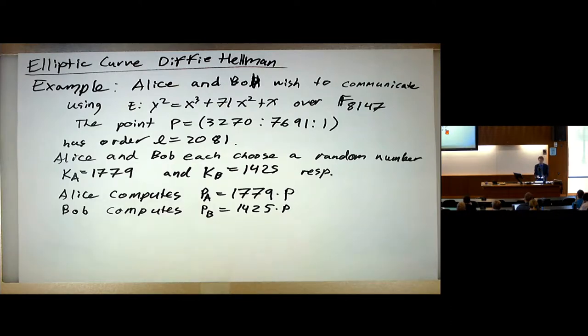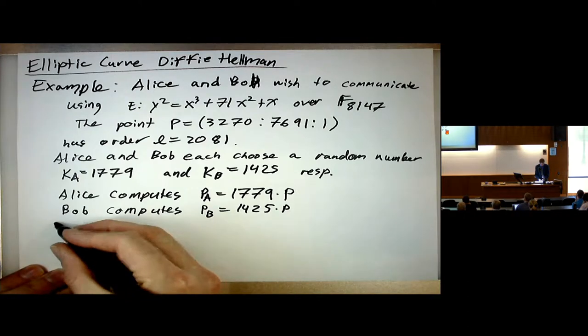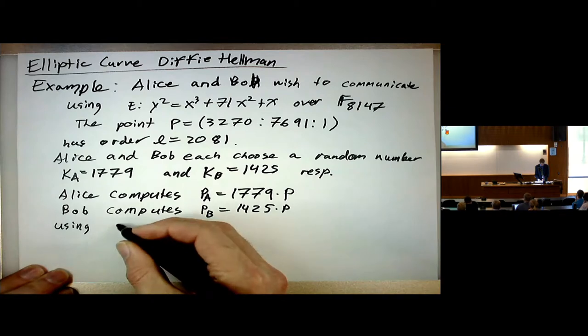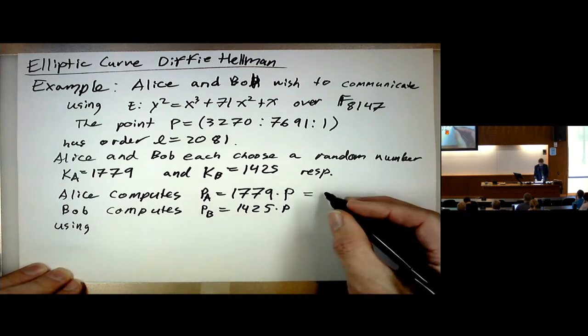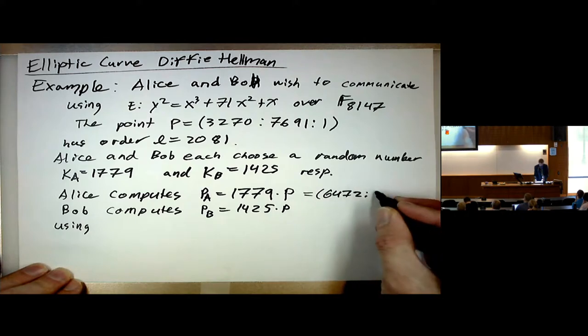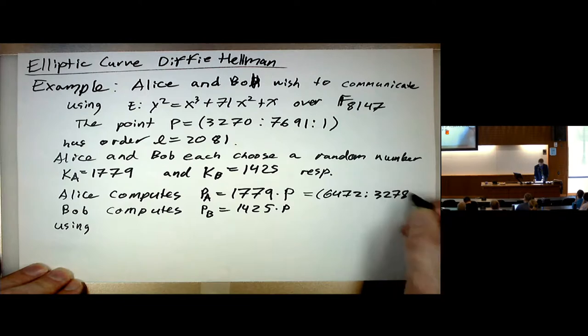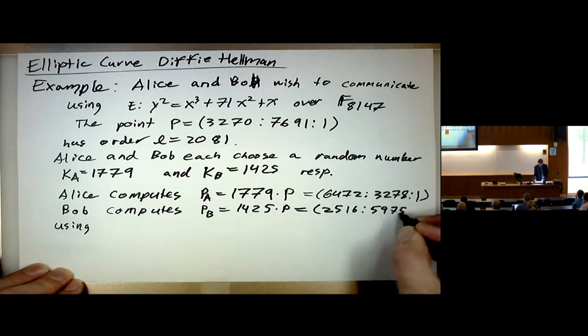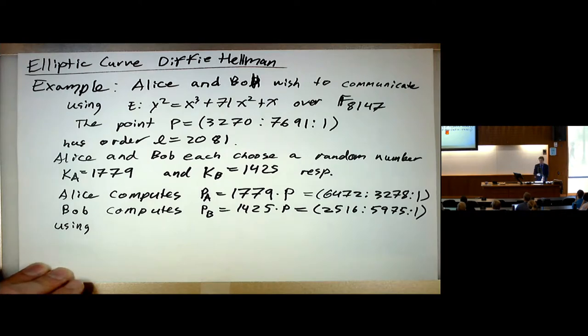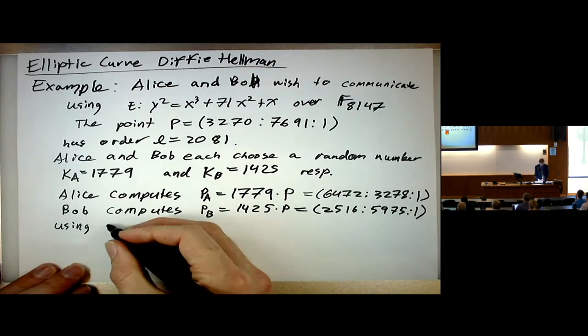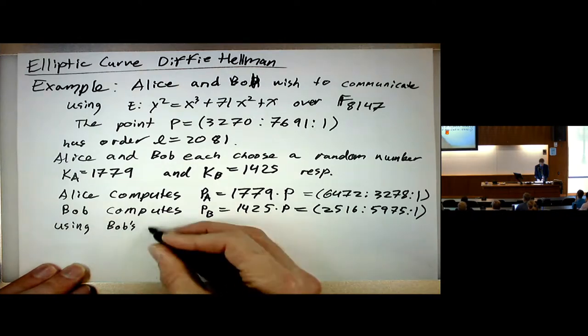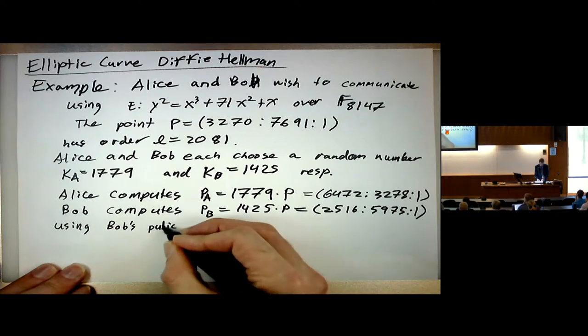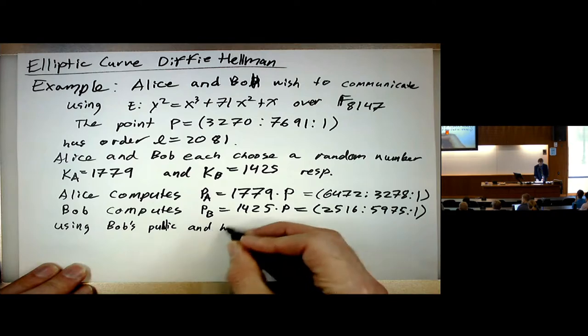Here we have an additive structure so we're doing repeated addition. So just as in exponentiation you have a base, this is sometimes called a base point. So now using Bob's public key, you can get those by SAGE or Magma, or you can write your own code to do it.